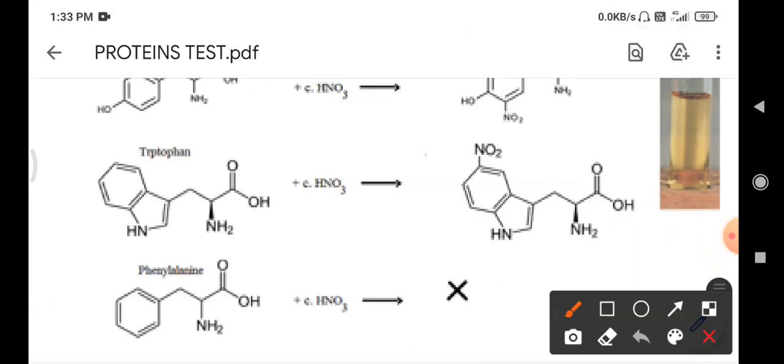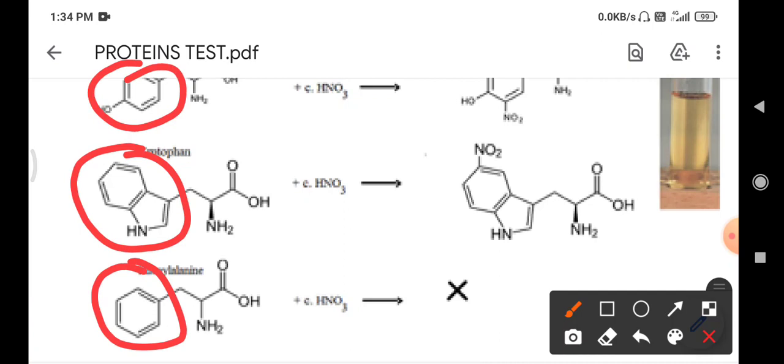The ring in tyrosine is aromatic in nature, tryptophan is aromatic in nature and phenylalanine is also aromatic in nature but phenylalanine does not produce color with xanthoprotic test.